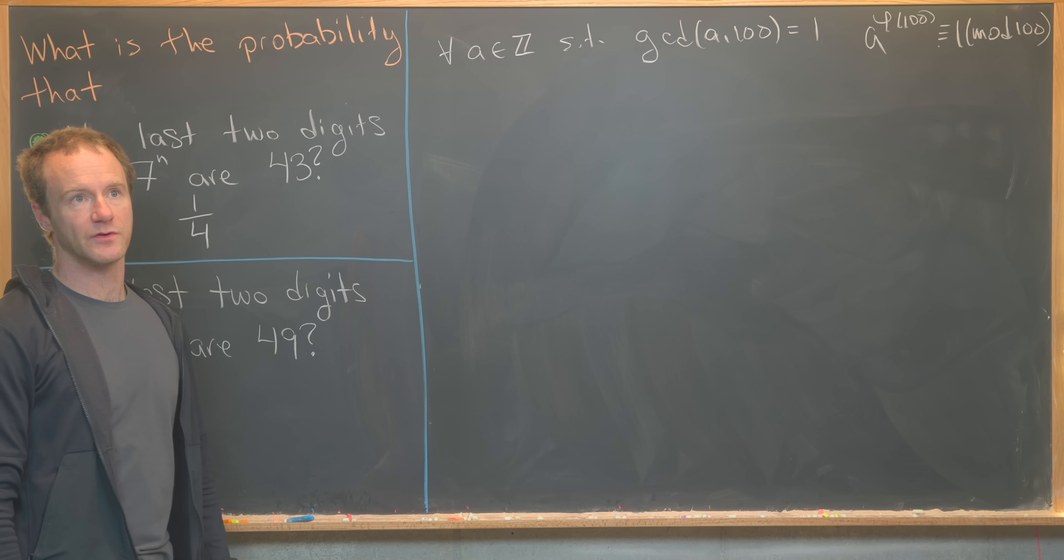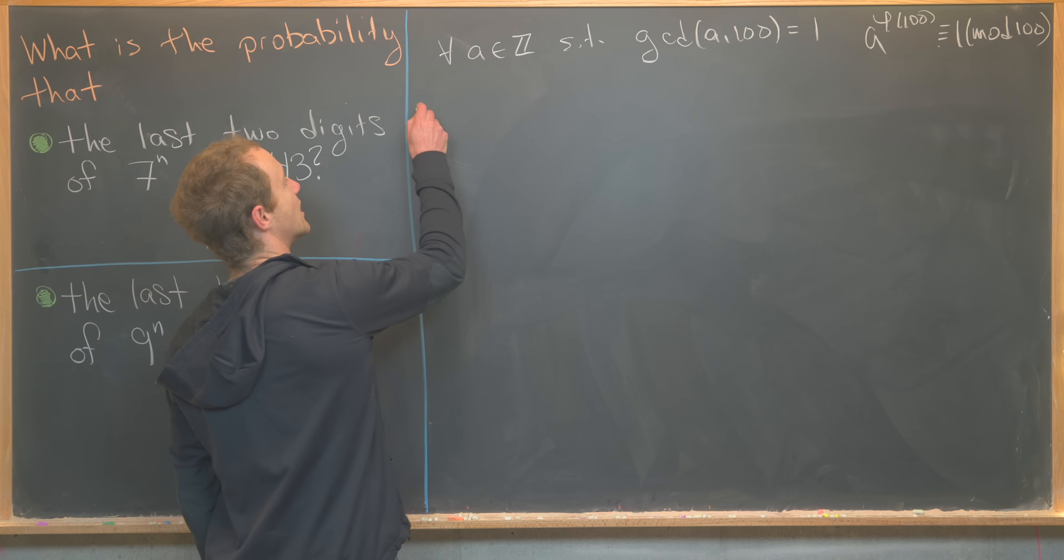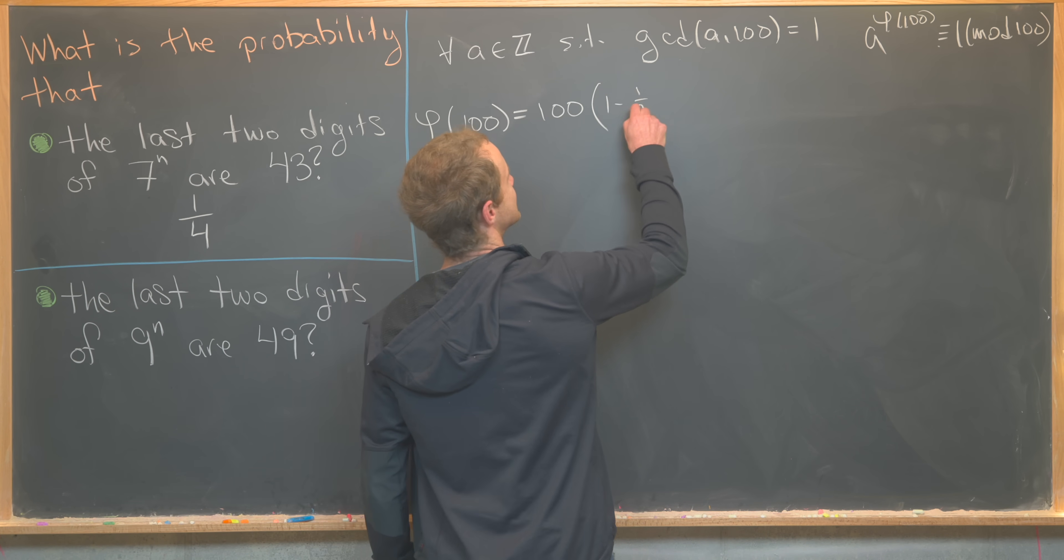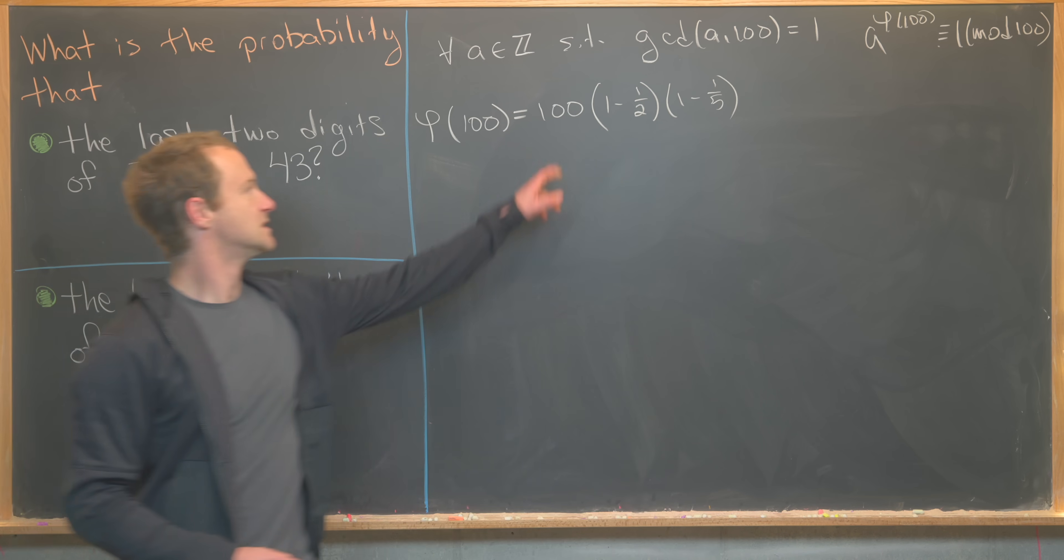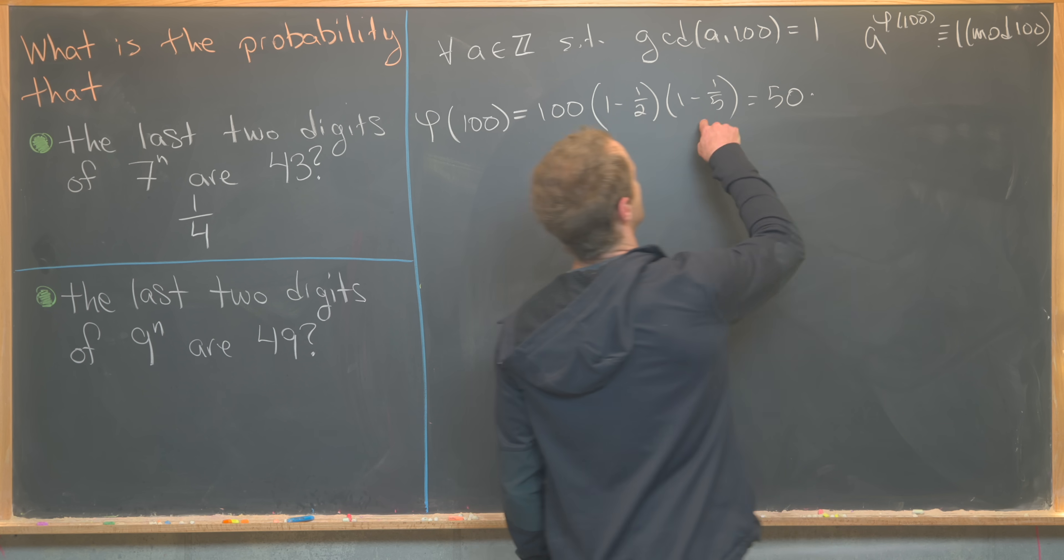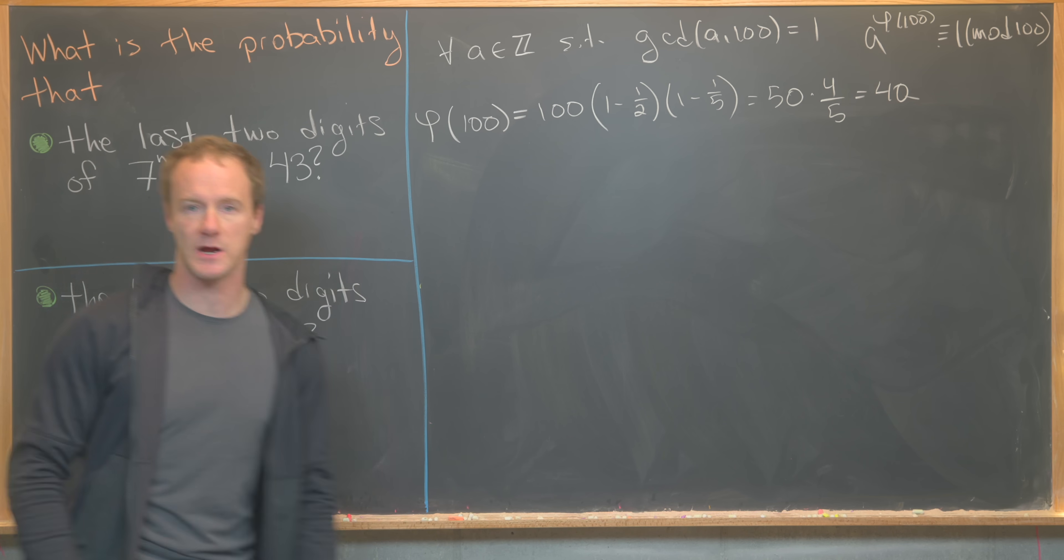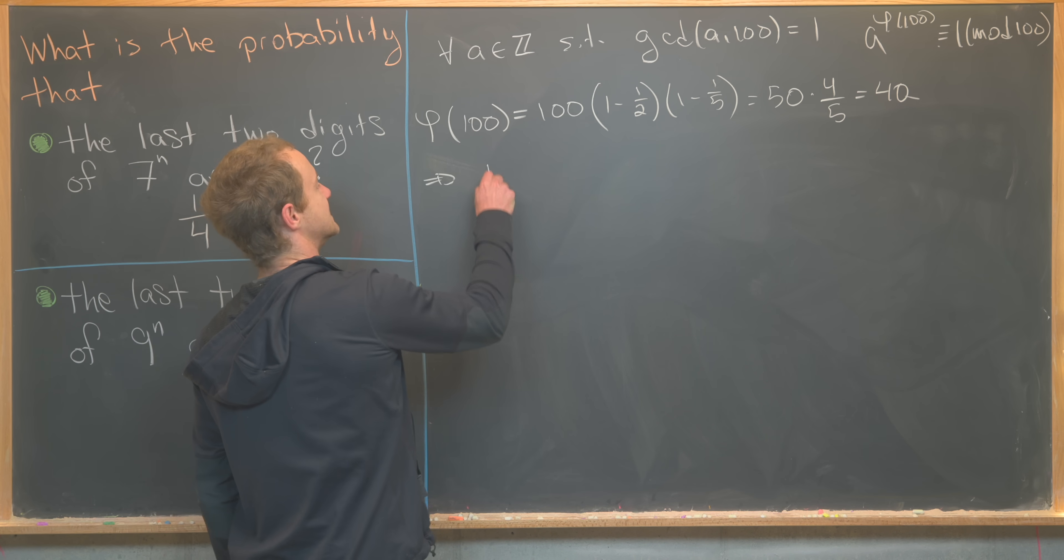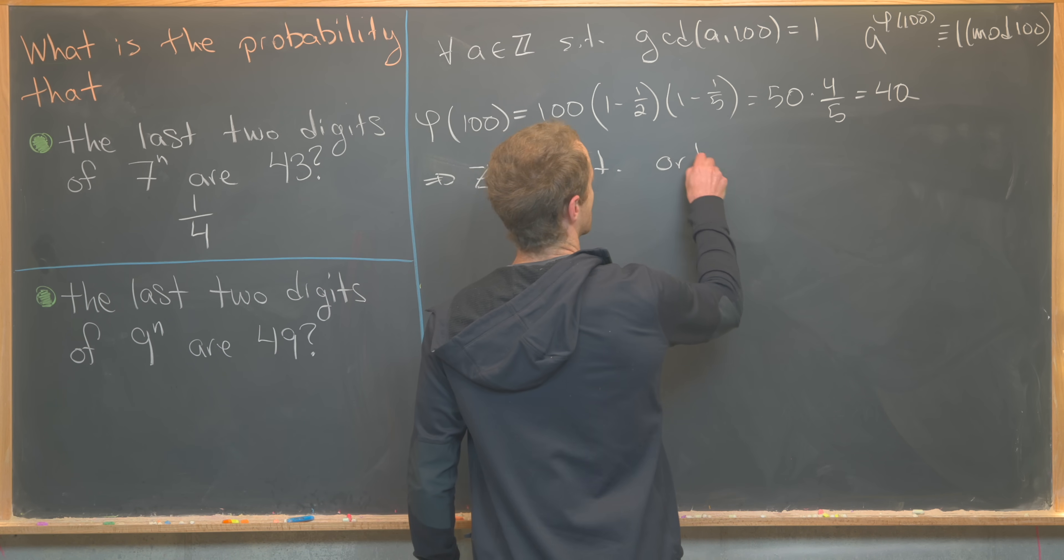Also, we know the only prime factors of 100 are 2 and 5, so we can calculate phi of 100 very easily. So notice phi of 100 will be equal to 100 times 1 minus half times 1 minus fifth. So let's see, 100 times 1 minus half, that's going to be 50, and then we need to multiply that by 4 fifths, so notice we get 40. And also notice that 100 is not of one of those special forms that we saw on the last board. It's not a power of a prime, and it's not twice a power of a prime.